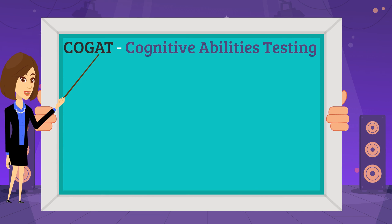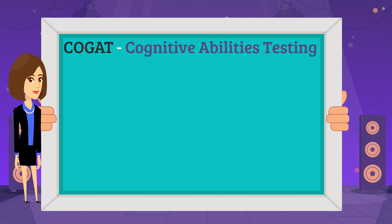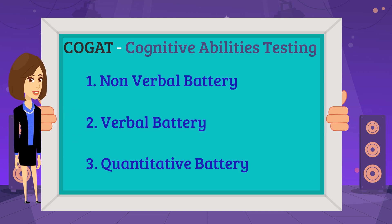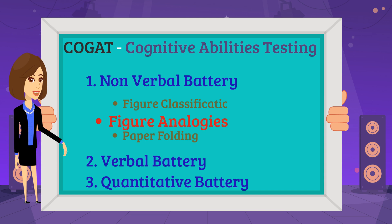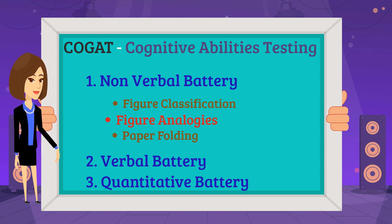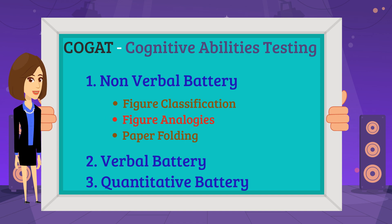COGAT is an assessment intended to estimate students' reasoning and problem-solving abilities. There are three categories in COGAT: non-verbal battery, verbal battery, and quantitative battery. Figure Analogies is one of the question types in non-verbal battery, and we are going to learn about it in this video.